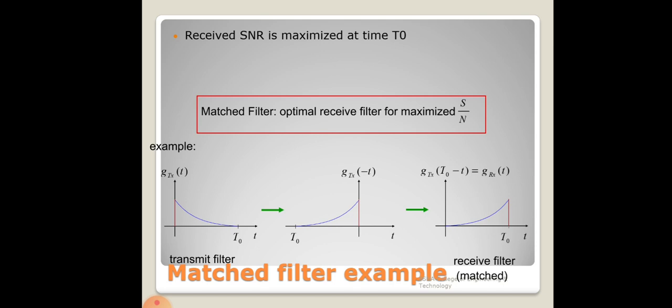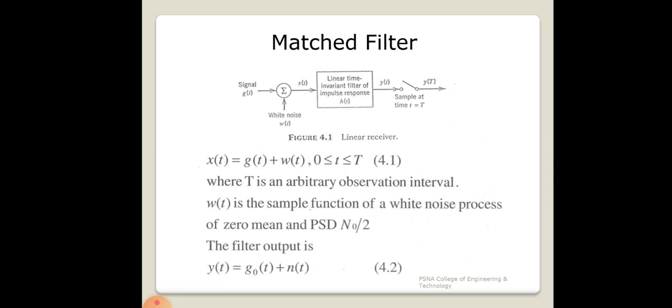The received SNR must be maximized at time period T. For maximum SNR, the transmit filter function and the receiver filter must be matched pairs — both in the time domain and frequency domain. This is the matched filter concept, studied as a linear receiver. In the sample block diagram, signal g(t) is mixed with white noise w(t), producing x(t).